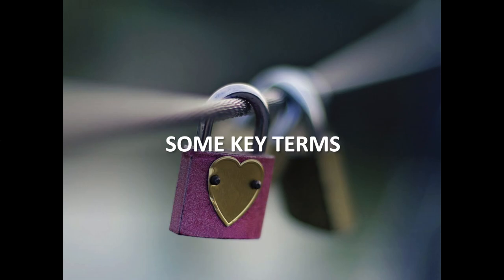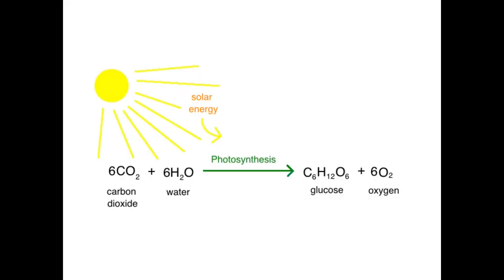Just going through some key terms. A reminder of the basic process of photosynthesis — apologies to biologists, this is a very simple version. Photosynthesis takes CO2 out of the atmosphere; it only happens in the presence of sunlight. So you need sunlight and water. If you have all three of those things, plants are able to make their own food and produce oxygen. It's a very key part of the carbon cycle — it's a transfer of carbon.